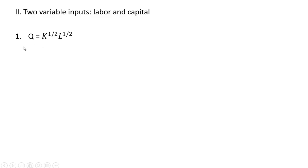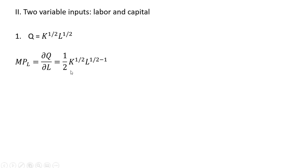Let's move on to the case where we have two variable inputs in the long run, where both labor and capital can be varied. Here's our production function. Now we're going to be using partial derivatives. The marginal product of labor is a partial derivative of the production function with respect to labor — holding K as a constant. Bringing the one-half down in front from the exponent on L and then subtracting 1 from that exponent on L gives us our result.